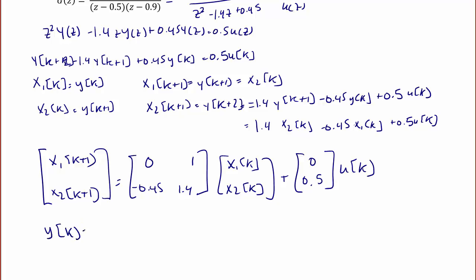And our output y of k equals the row vector [1, 0] times [x1(k); x2(k)].